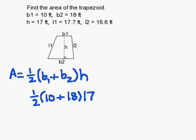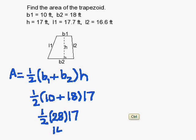Now I'm going to follow order of operations and do parentheses first. That gives me one-half times 28 times 17. If I do one-half times 28, that's 14. Then we have to do times 17.